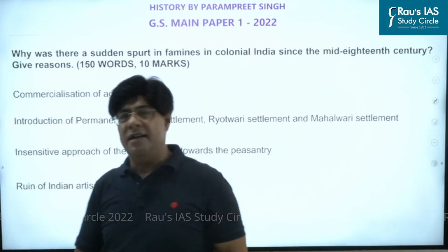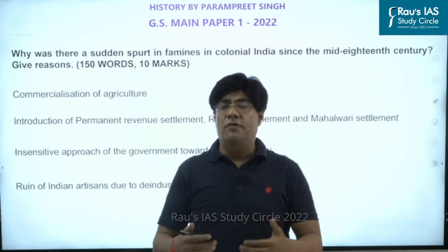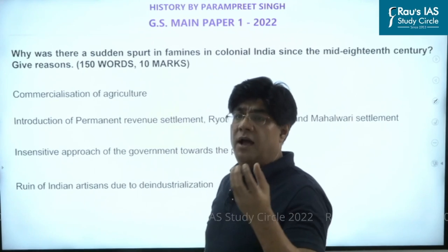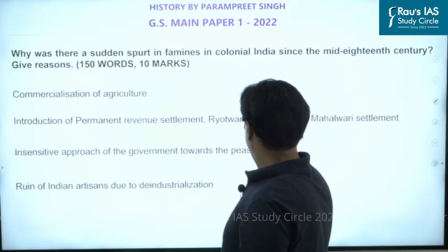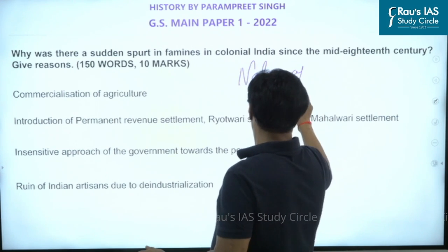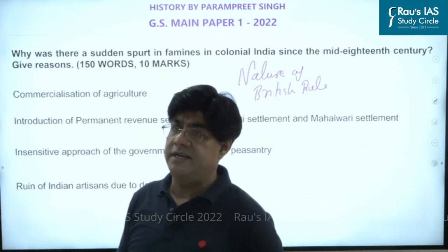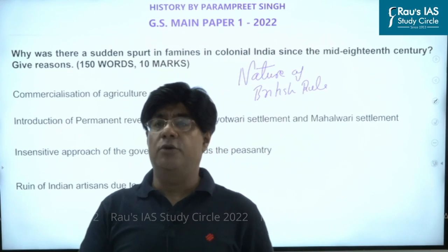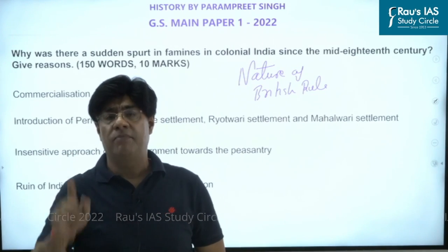The next question concerns the causes of famines in colonial India. Famine is a situation of scarcity of food due to man-made factors where people are dying because of lack of food. The main cause of famines in colonial India is the nature of British rule — colonial in nature. Because the rule was colonial, the British rulers never paid attention to the welfare of Indians. They introduced policies which distorted and destroyed much of the indigenous economy in India.